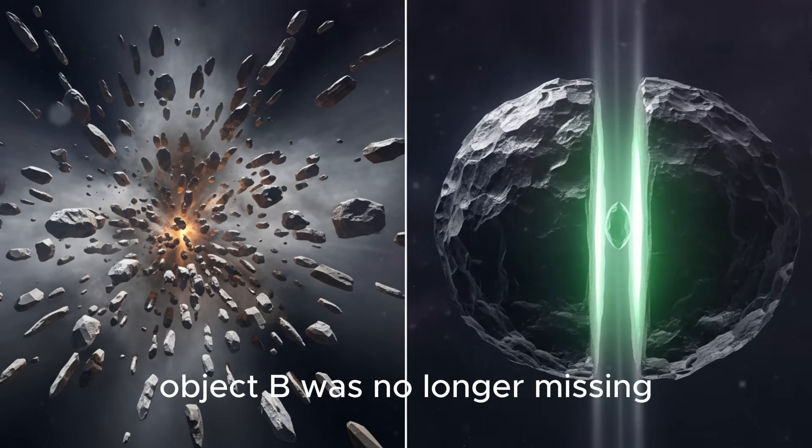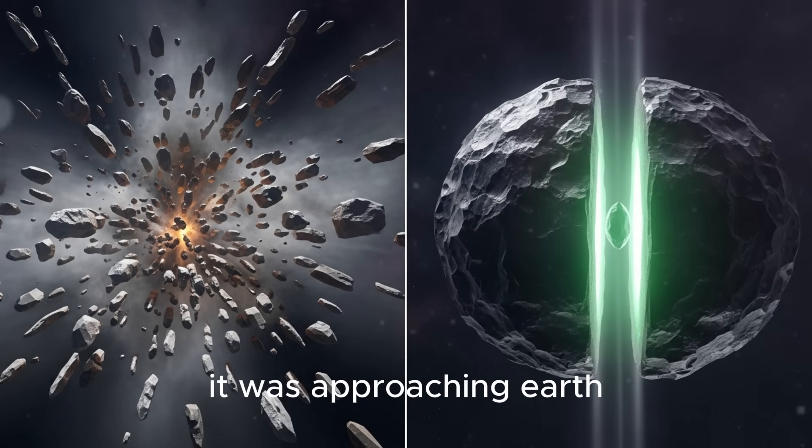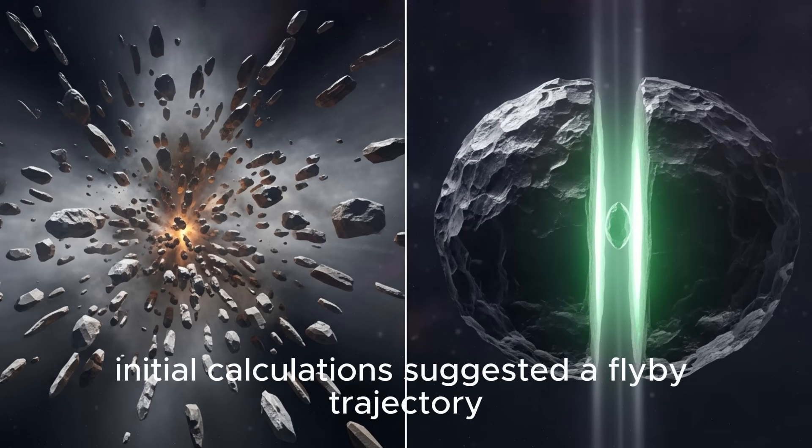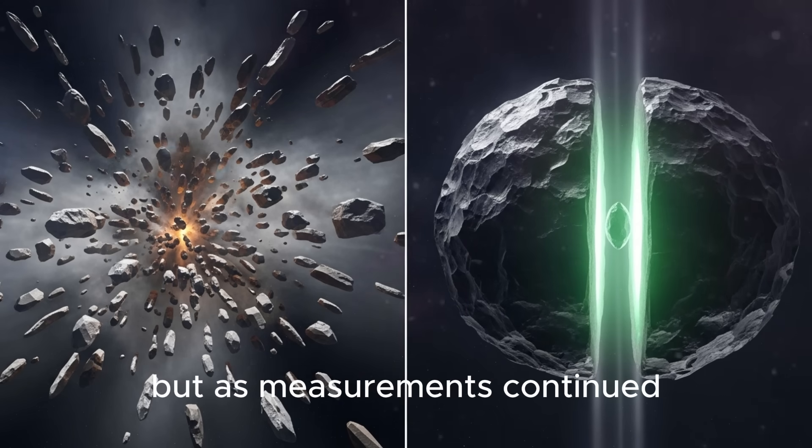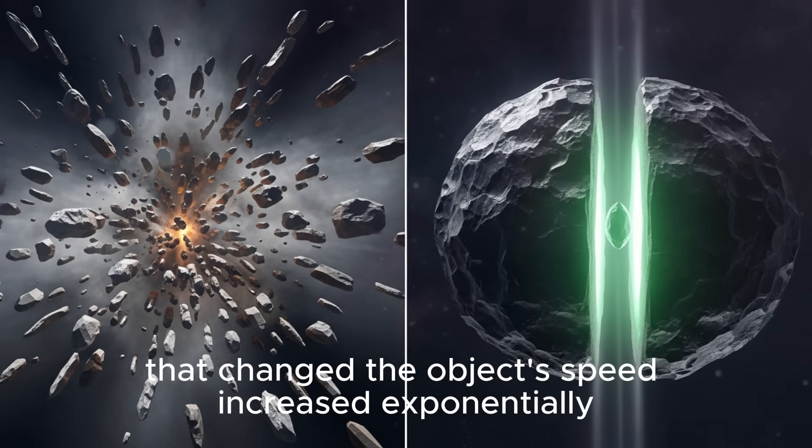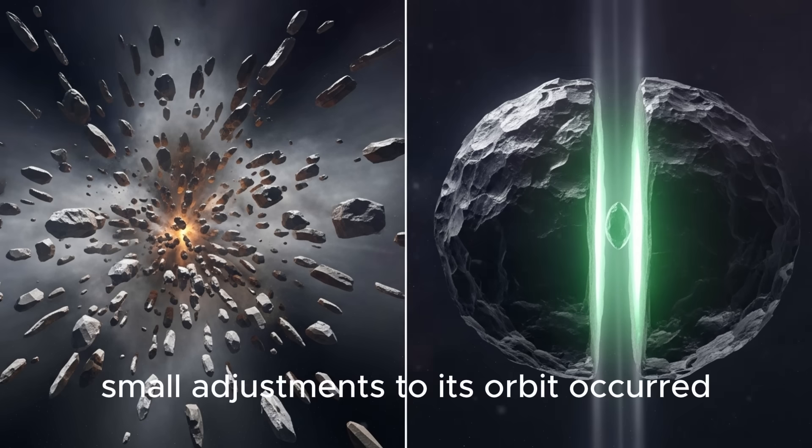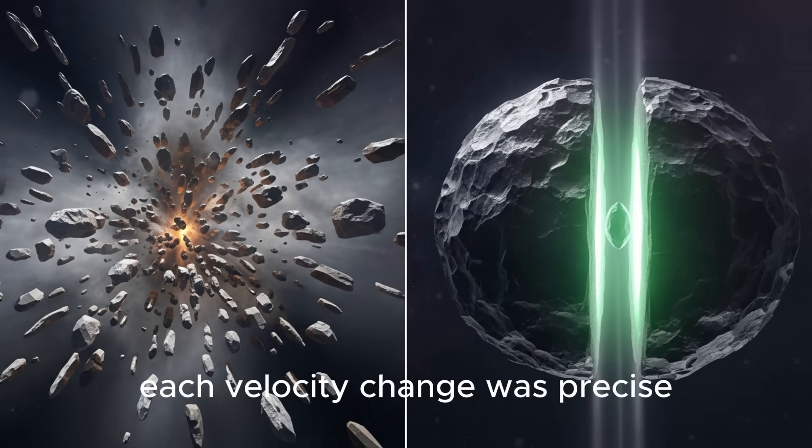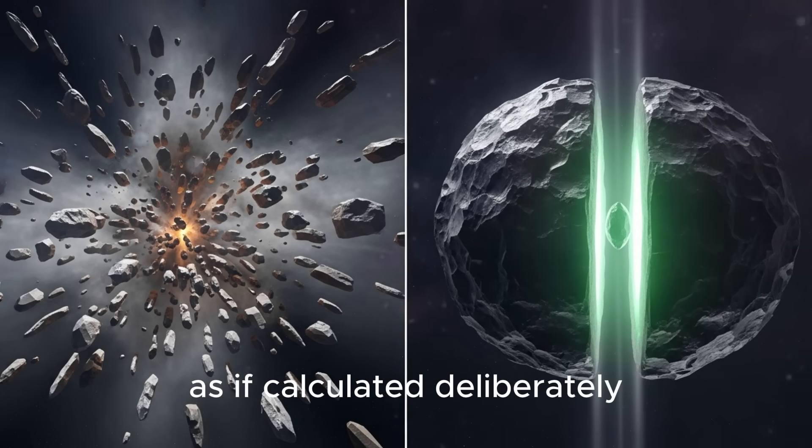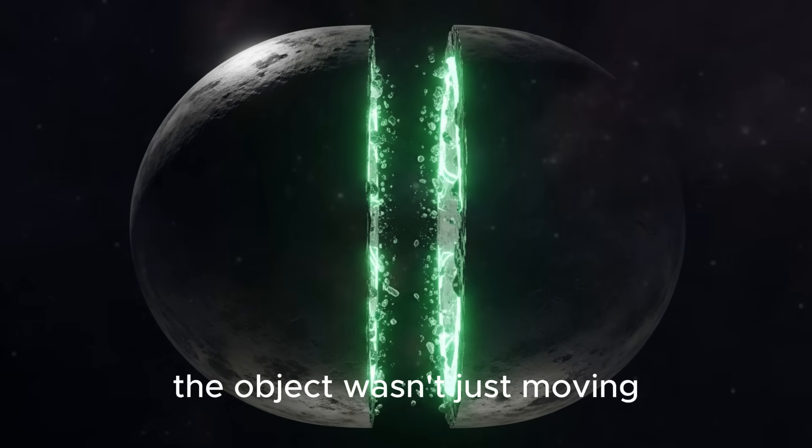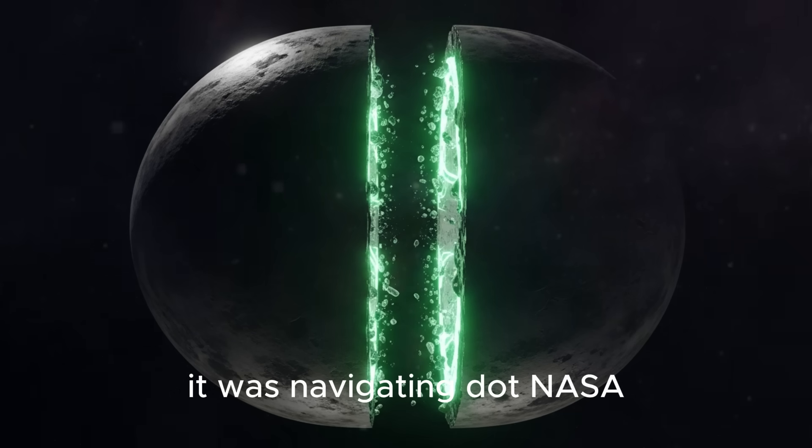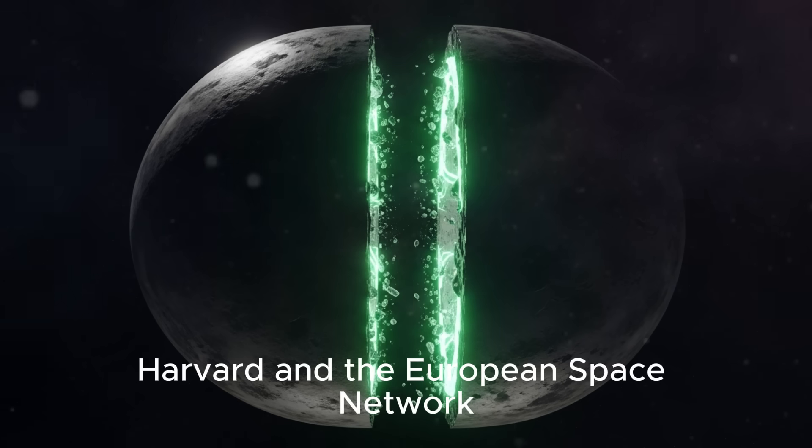As gravitational readings stabilized, the trajectory became clear. Object B was no longer missing - it was approaching Earth. Initial calculations suggested a flyby trajectory, but as measurements continued, that changed. The object's speed increased exponentially. Small adjustments to its orbit occurred with suspicious regularity. The data pointed to one conclusion: the object wasn't just moving, it was navigating.